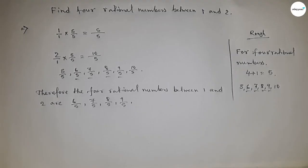This is the process to find the four rational numbers between one and two. That's all, thanks for watching. Please subscribe.